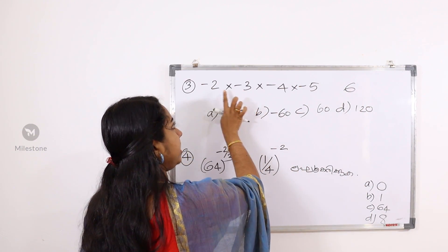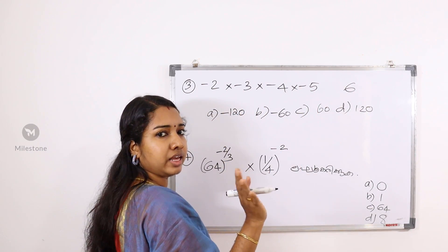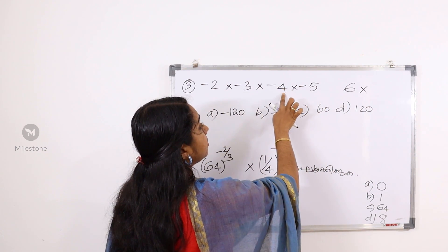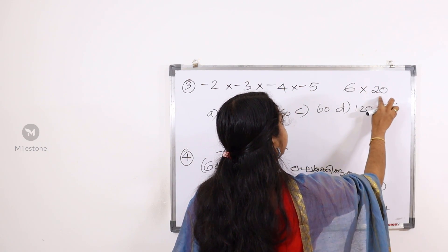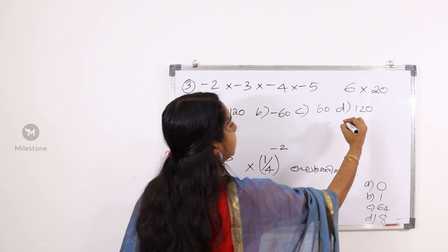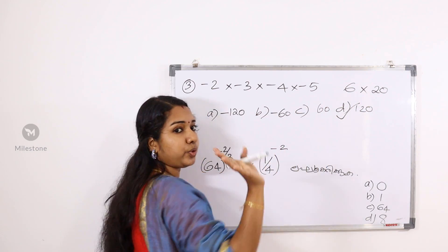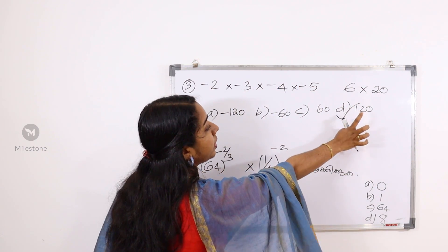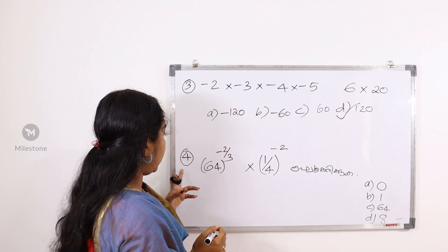Two negative numbers: minus 2 into minus 3 gives 6, which is positive. Then 6 into minus 4 gives minus 24. Then minus 24 into minus 5 gives 120. The options are minus 120 and plus 120. How do you get the answer with negative numbers?